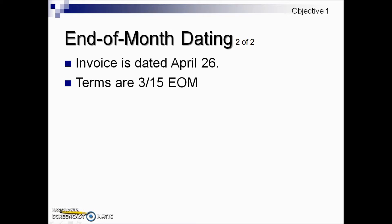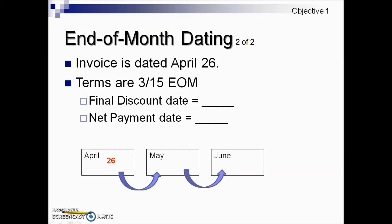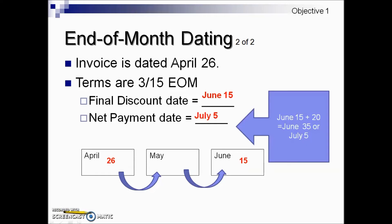Here we have an invoice dated April 26th. The terms are 3% if paid within 15 days EOM. They're asking us to find the final discount date. Because this invoice is at that critical late date — April 26th — we're given the grace period of the next month, and then we start the calculation for the final discount date in June. Adding our 15 days from the beginning of June puts us at a final discount date of June 15th. This example doesn't have a net due date either, so we add 20 days onto June 15th, which puts us at July 5th.